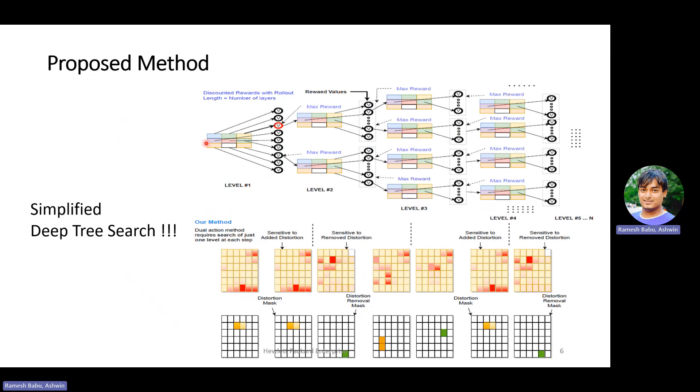Also, in board games, the actions once taken cannot be reversed, but in our application where previously added distortions, if it does not contribute towards misclassification, can be removed in the future. Hence, to simplify the deep tree search, we propose an additional removal step.